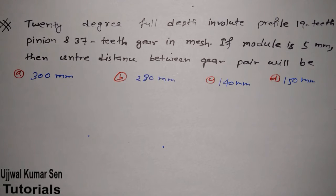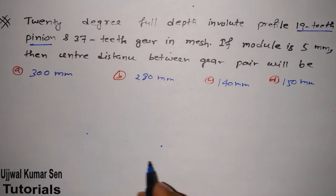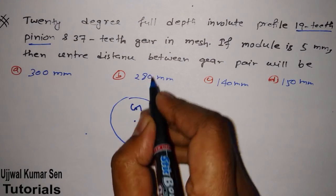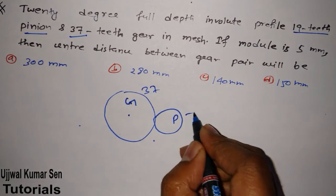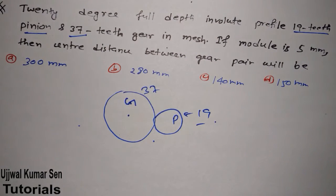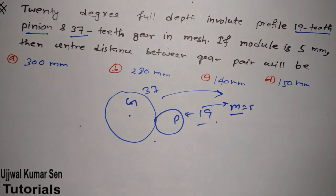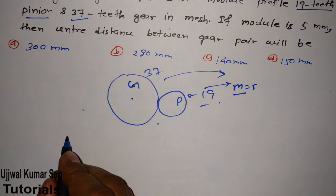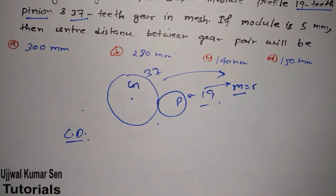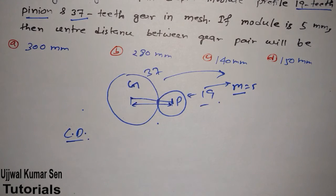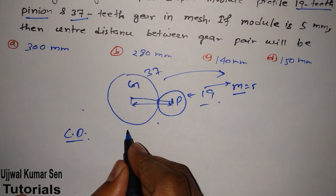We have a gear with 37 teeth and a pinion with 19 teeth, both in mesh. The module is 5 for both gear and pinion. We have to find out the center distance, which is the distance from the center of the gear to the center of the pinion.